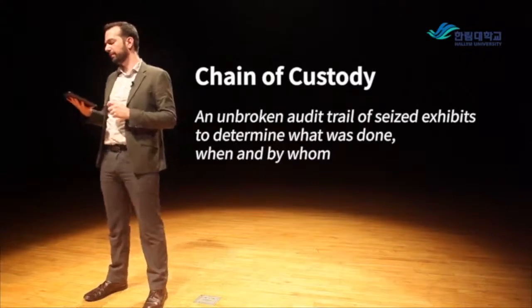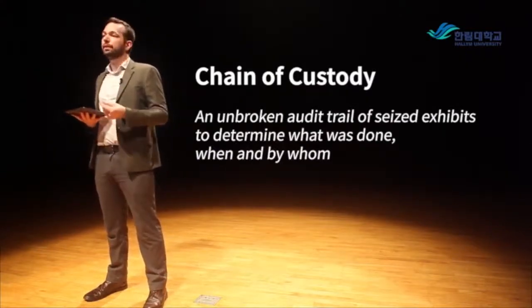Chain of custody is very important for proving to court that we've taken all necessary procedures to ensure our evidence is reliable and hasn't been tampered with. It is an unbroken audit trail of seized exhibits to determine what was done, when, and by whom. With digital evidence it's easier to manipulate information, so we have to protect digital evidence carefully. Chain of custody means always knowing where the data is, who has access to it, and what they were doing with it.